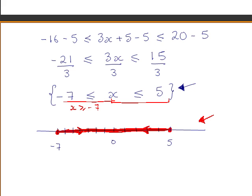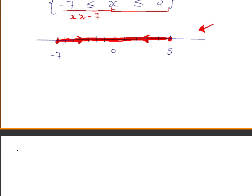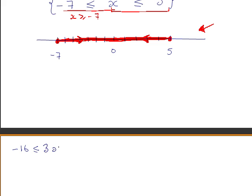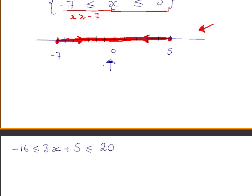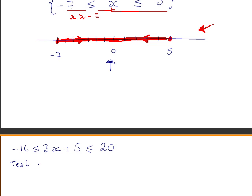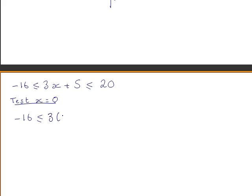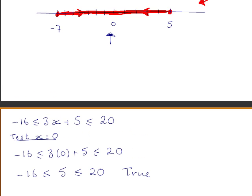We should check if we are correct. We will substitute a value between minus 7 and 5 into our original inequality: minus 16 less than or equal to 3x plus 5 less than or equal to 20. Substituting x equals 0, we get minus 16 less than or equal to 5 less than or equal to 20. This is true, as expected, since 0 is part of our solution set.